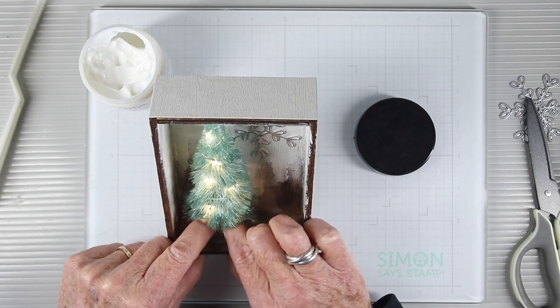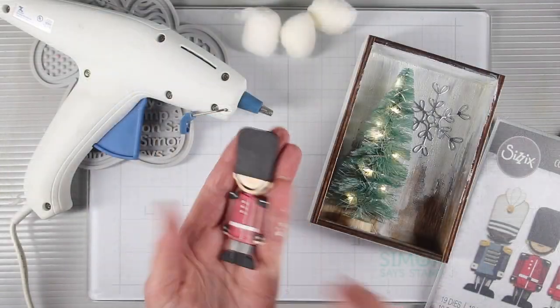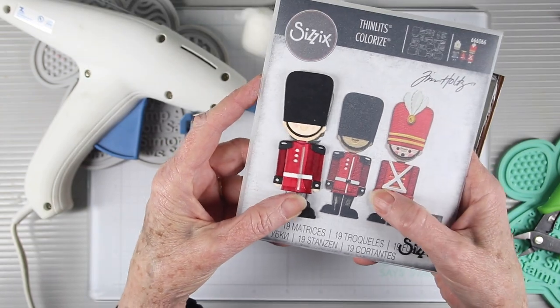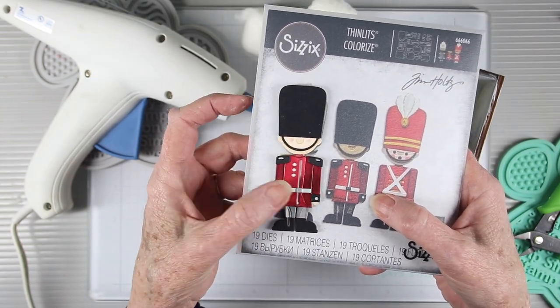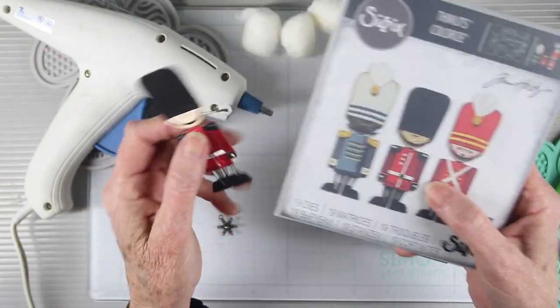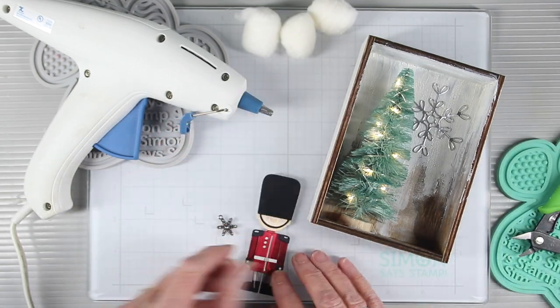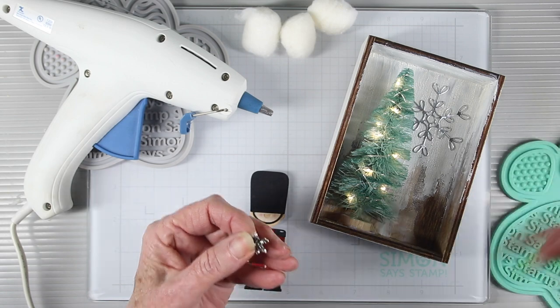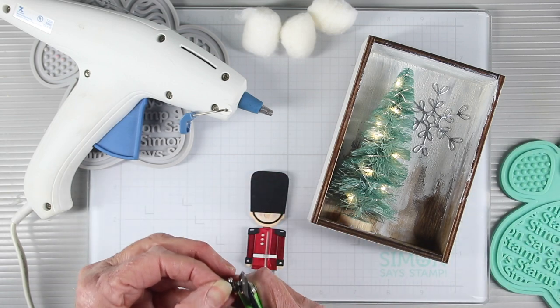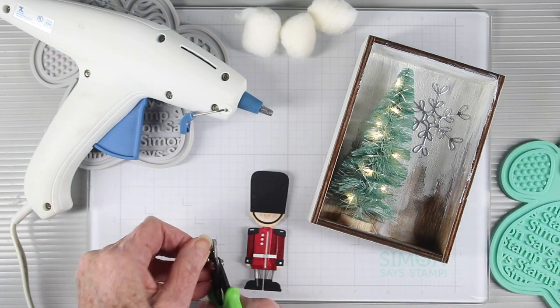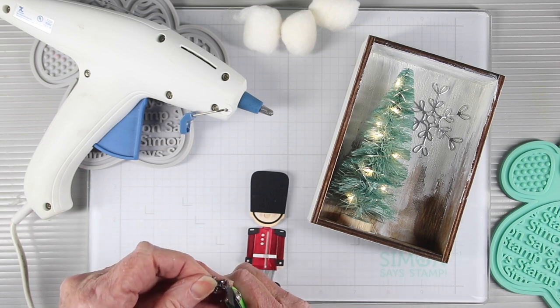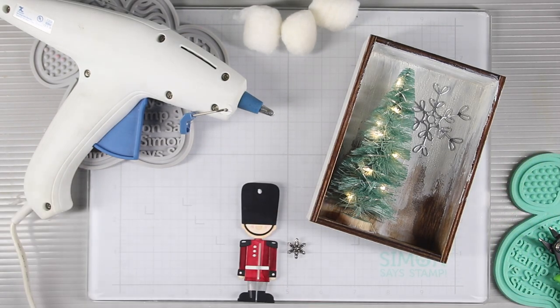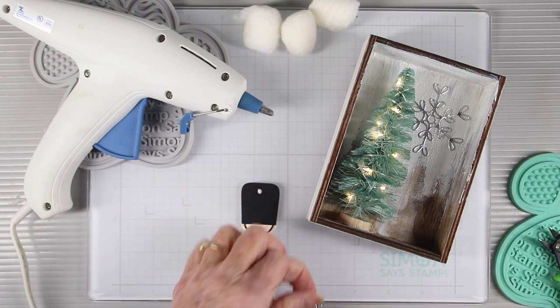I've used the Tim Holtz Sizzix Harvey die and I've cut that out from white paper and then colored it with some Copic markers. These are really fabulous dies because each of the pieces tells you what color each piece is. For the top of his hat I'll be using one of the snowflake adornments and I want to cut off the top ring by using my snippers to snip that off. To glue the snowflake in place I'm using just a dab of the Simon Says Stamp craft tacky glue and then I can place the snowflake just at the top.